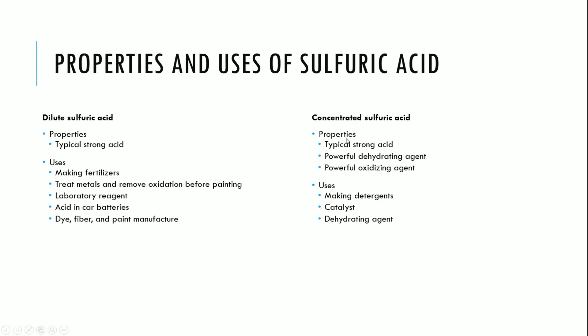Concentrated sulfuric acid is a strong acid, a very powerful dehydrating agent, and a very powerful oxidizing agent. Its uses include making detergents, acting as a catalyst, and being used as a dehydrating agent.